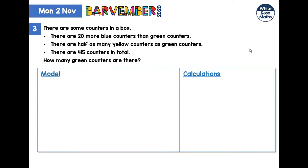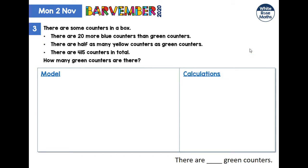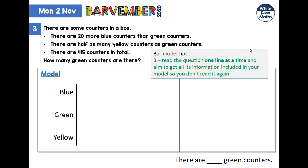Question three — a bit more complicated, but let's start the same way. How many bars do I think I need? I can see that this story is about blue, green, and yellow counters, so I'm going to start with three bars. Another tip: try to break this question down line by line, getting everything from one line into our model so we don't have to read it again.